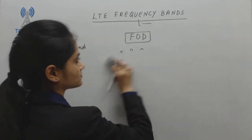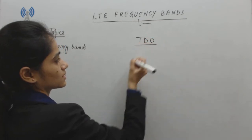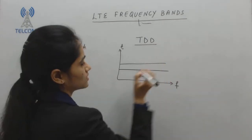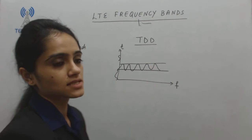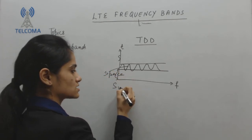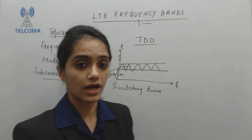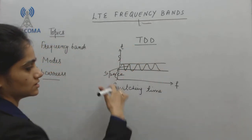Now coming to TDD mode. In TDD mode, there is no need to divide the frequency. Instead, you divide by time. Half of the time you are uploading data and half of the time you are downloading data, and in between you also need to give some space so that they will never interfere. This space is called switching time — the time required to jump from uplink time to downlink time.